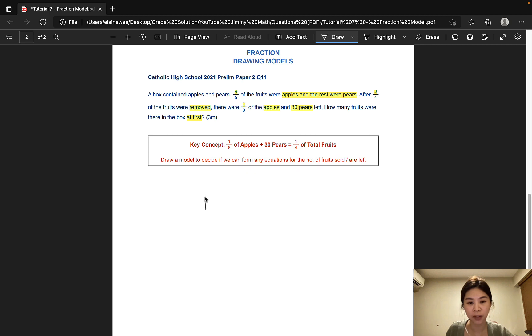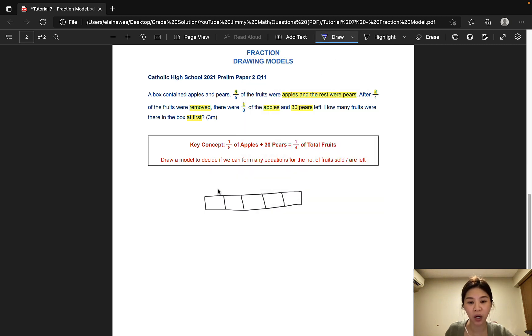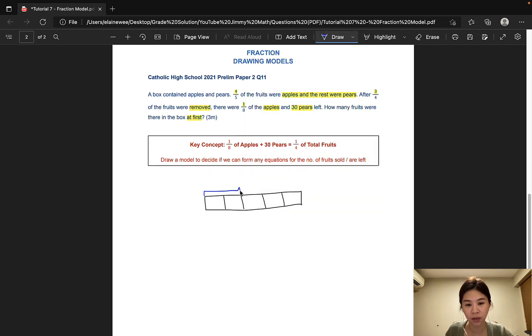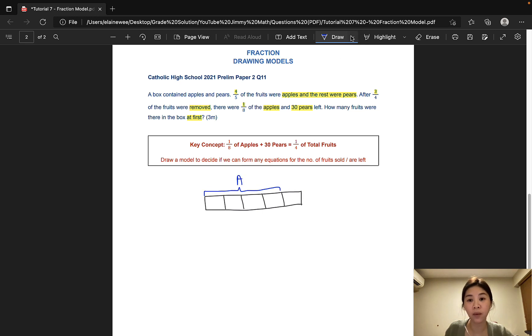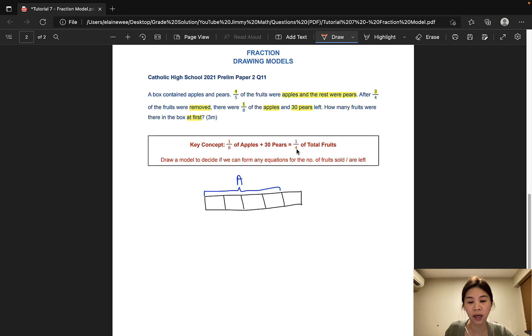To start, let's draw a model and split it into five equal groups since five was the original denominator here. Out of five units, four units were apples and the rest were pears. So let's indicate that on the model. Four-unit apples. That would mean the remaining one unit will be pears.